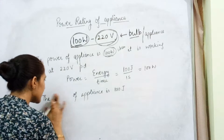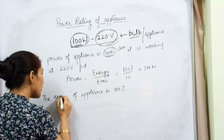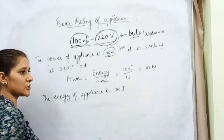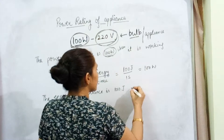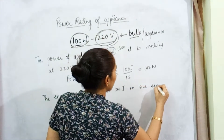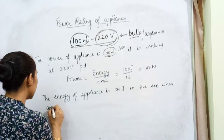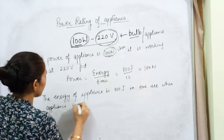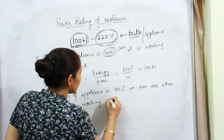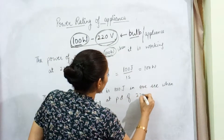Is this correct? No. When writing in terms of energy, it should say: the energy of the appliance is 100 joules in 1 second — not power. So the correct statement is: the energy of the appliance is 100 joules in 1 second, when the appliance is working at a potential difference of 220 volt.